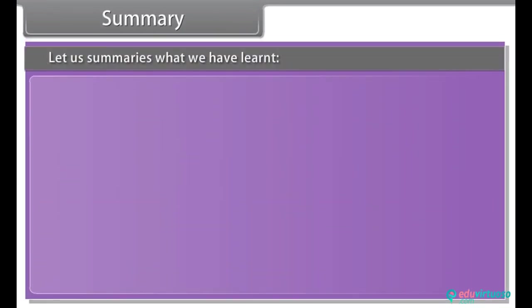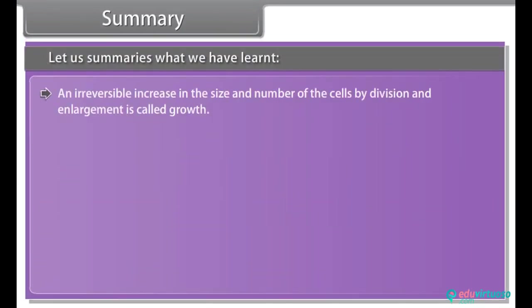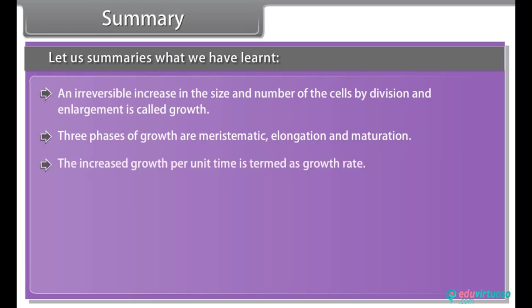Let's summarize what we have learned. An irreversible increase in the size and number of cells by division and enlargement is called growth. Three phases of growth are meristematic, elongation and maturation. The increased growth per unit time is termed as growth rate. The conditions necessary for growth are nutrients, water, oxygen, temperature.